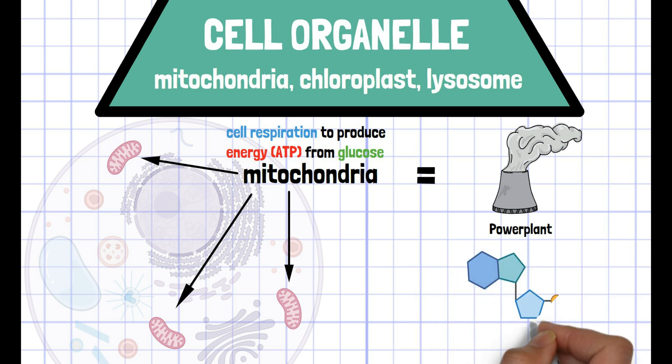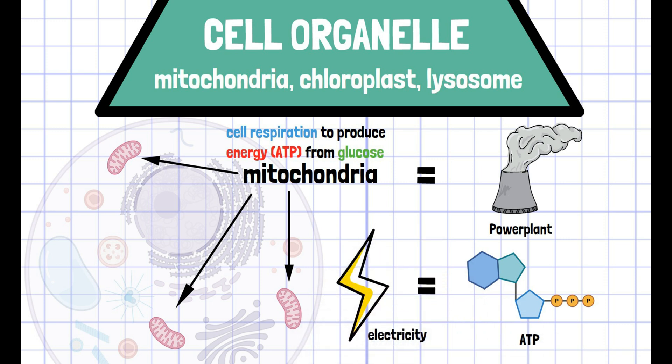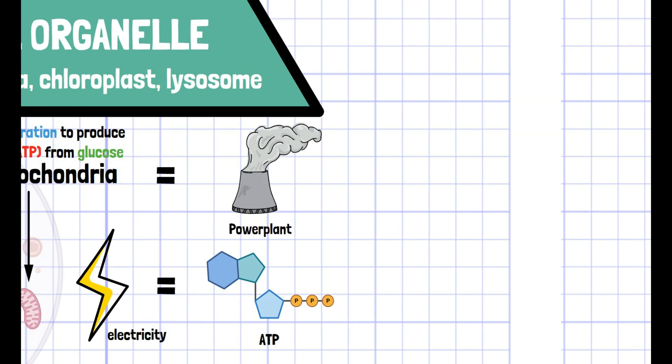ATP is like electricity that provides energy to perform a variety of activities. Without ATP, many of the cellular activities cannot be performed. So the function of mitochondria is crucial.